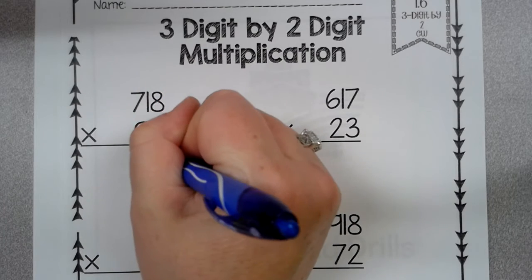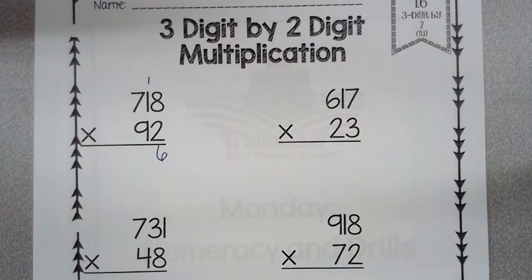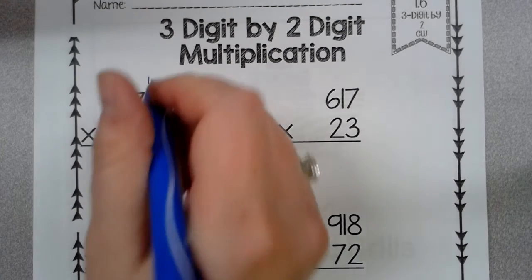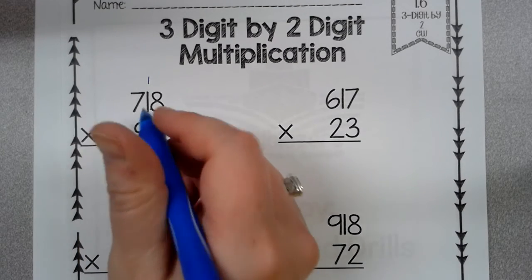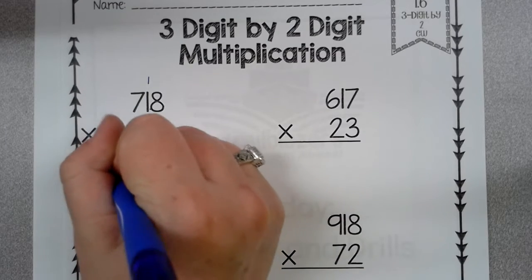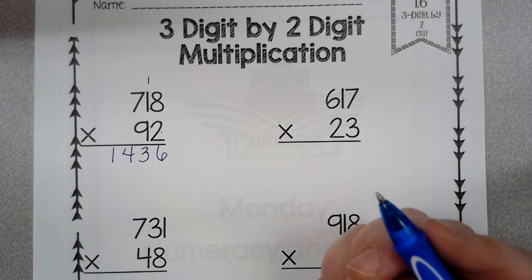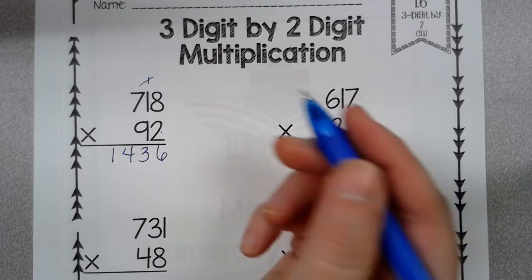Okay. Eight times two is 16. So I'm going to do a six here, put my one, and I know they don't give you a lot of room for the one. Okay. Two times one is two plus one is three. Two times seven is 14.